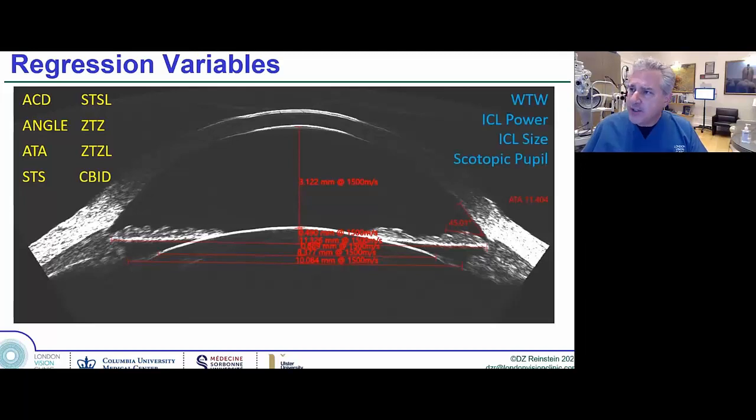Of course, we always have the non-anatomical parameters there. They've always been there: the white-to-white, the ICL power, the lens we're implanting, and the scotopic pupil, which had already been shown to change the vault postoperatively. The lights are on, the vault goes down.